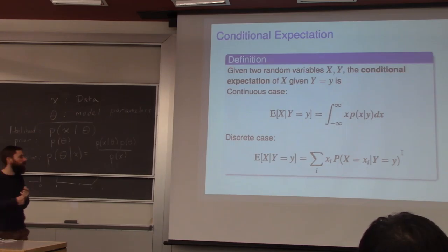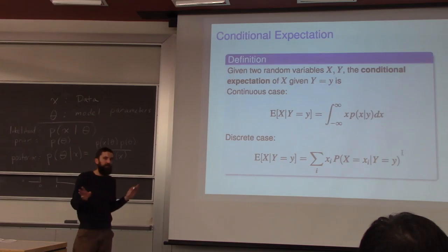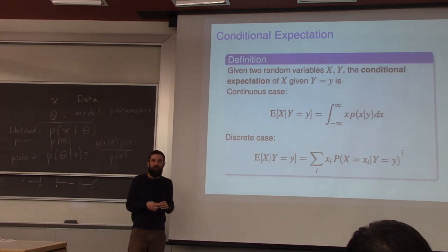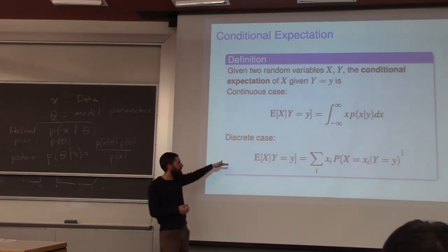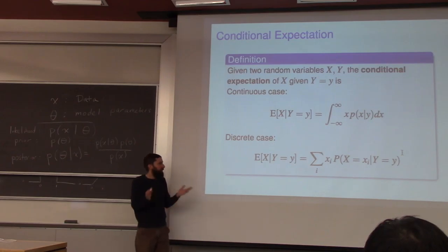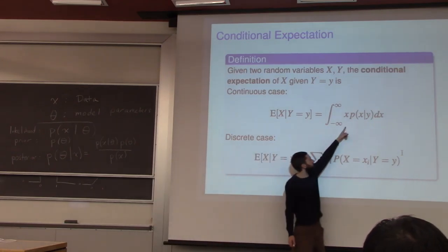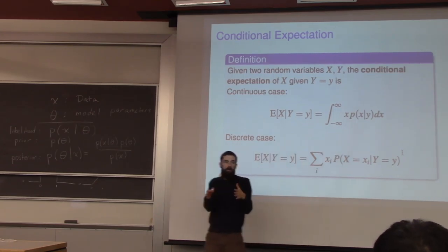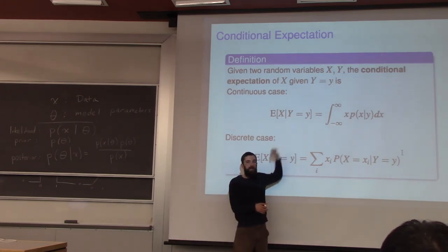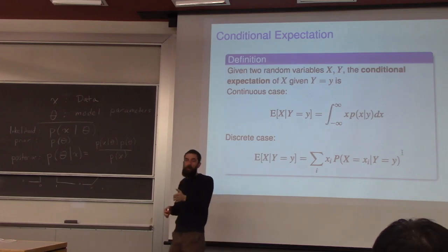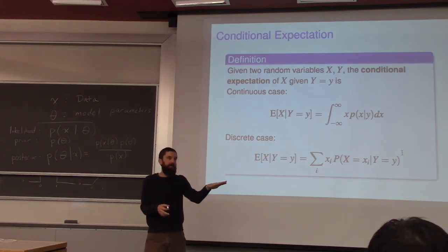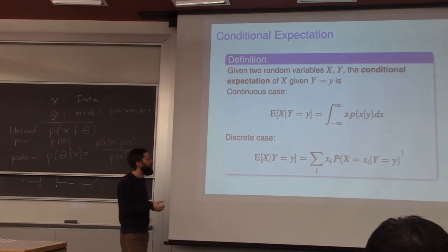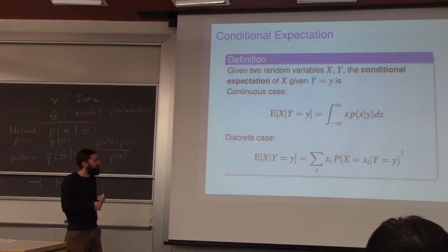You're also going to have to prove a couple of things about conditional expectation in your homework. Conditional expectation is just expectation where you replace the density with the conditional density — it's the average value you'd expect for X if you knew something about the value of Y. If Y influences X, knowing Y might change the average value, and that's the conditional expectation.